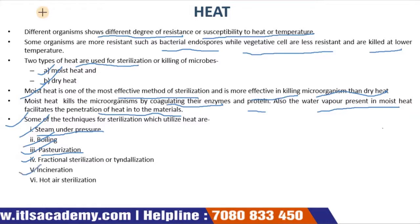Incineration kills microorganisms by burning. Incinerators are used to destroy disposable and expendable materials and also sterilize inoculating loops. Hot air sterilization is a dry heat method for sterilization of materials that may be damaged by moist heat, such as powders and oils. Microbiological ovens employ very high dry temperatures: 171°C for 1 hour, 160°C for 2 hours, or 121°C for 16 hours depending on volume.